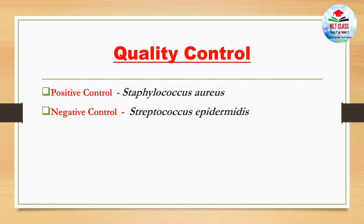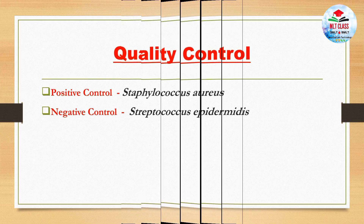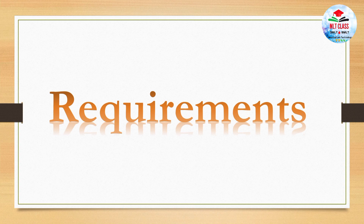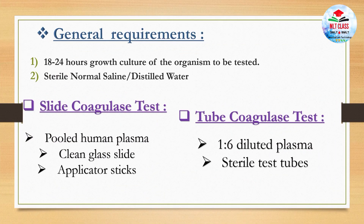The positive control is Staphylococcus aureus and the negative control is Staphylococcus epidermidis. The general requirements are 18 to 24 hours growth culture of the organism to be tested, sterile normal saline or distilled water, pooled human plasma, clean glass slides, and applicator sticks for the slide coagulase test. One-in-six diluted plasma and sterile test tubes are required for the tube coagulase test.